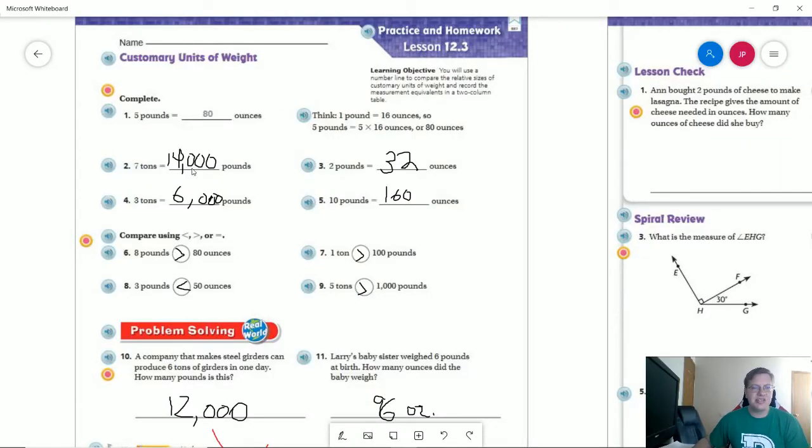I started writing some of these in just to save a little bit of time. I'm doing 7 times 2 for my basic math fact, which gives me 14. Then we can put three zeros at the end because we're multiplying by 2,000. So that would give us 14,000 pounds for this one. 32 ounces, 2 times 16. Two times 3 gives us 6, but we're multiplying by 2,000, so that would give us 6,000. 16 times 10 would give us 160.